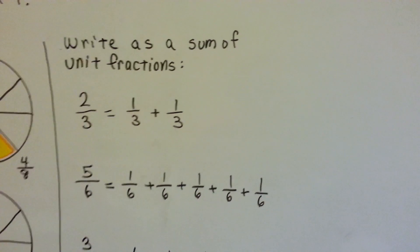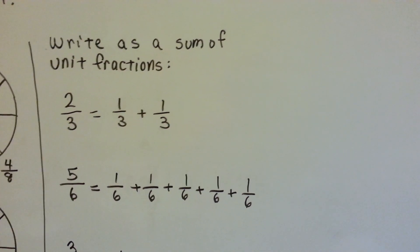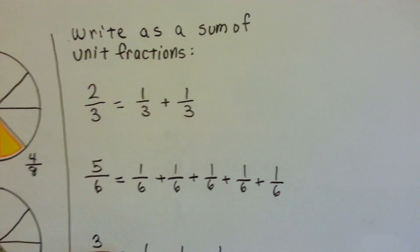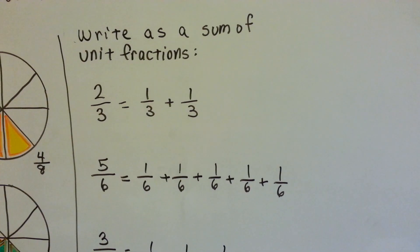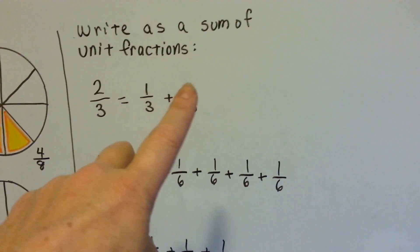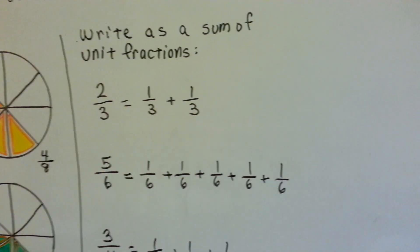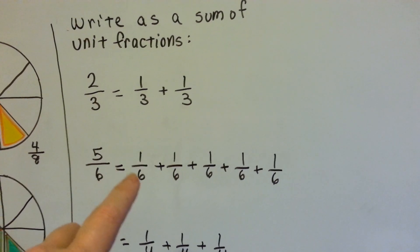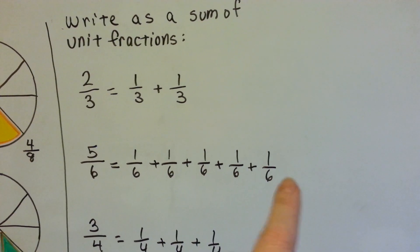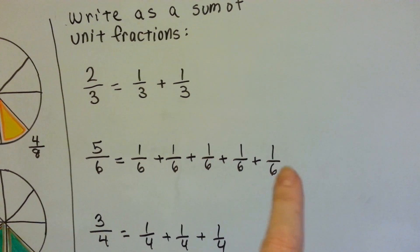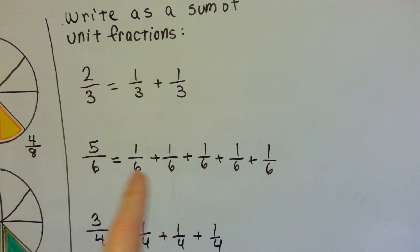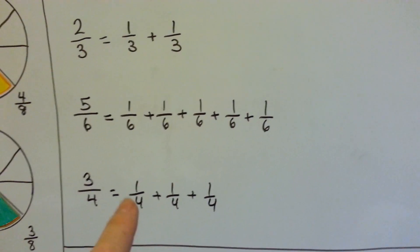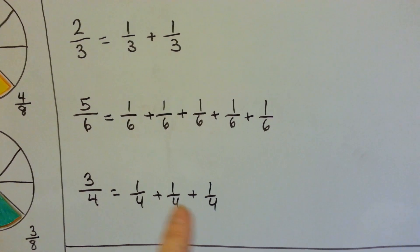If we wanted to write some fractions as sums of unit fractions, how would we do it? Remember, a unit fraction always has 1 as a numerator. So, 2 thirds would be 1 third plus 1 third — these are the unit fractions, each with a 1 as a numerator. 5 sixths would be 1 sixth, 5 times: 1, 2, 3, 4, 5. And they all have the same denominator because they're all the same size portion. 3 fourths would be 1 fourth plus 1 fourth plus 1 fourth.